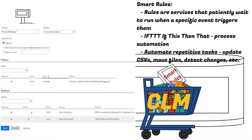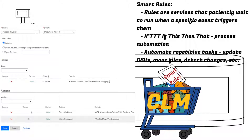SMART rules are helpful to automate repetitive tasks — updating CSVs, moving files, detecting document changes. All of this comes out of the box with the DocuScience CLM.